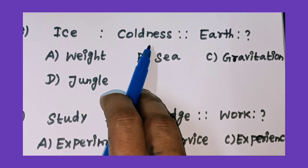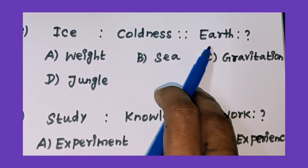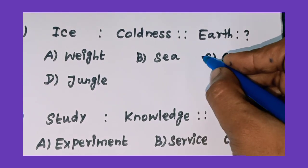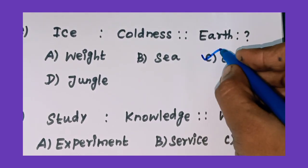Ice is related to coldness, and earth is related to gravitation force. The answer is option C: gravitation.